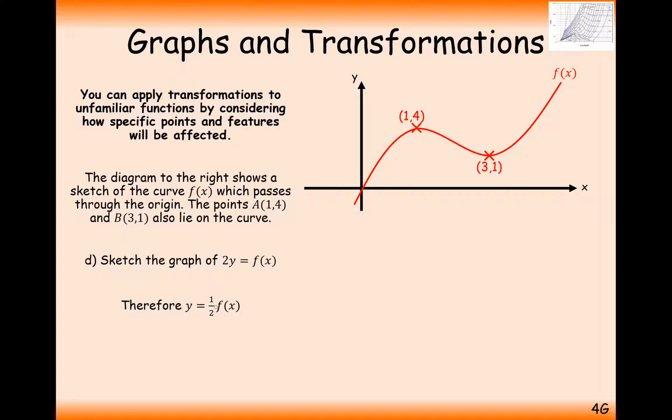And in the previous slide, we saw that anything outside the brackets affects vertical positioning. So what's going to happen here is the y-coordinate is going to be calculated, but then the new y-coordinate is going to have to be halved. So what we have here is effectively a shrinkage of our graph down towards the x-axis. All of the coordinates are going to have to be multiplied by half.